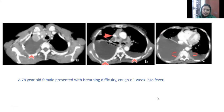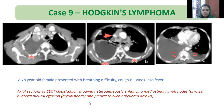Next case: a 78-year-old female who presented with breathing difficulty, cough, and fever for one week. CT images showing heterogeneously enhancing mediastinal lymph nodes, bilateral pleural effusion, and pleural thickening on both sides. Biopsy came as Hodgkin's lymphoma.